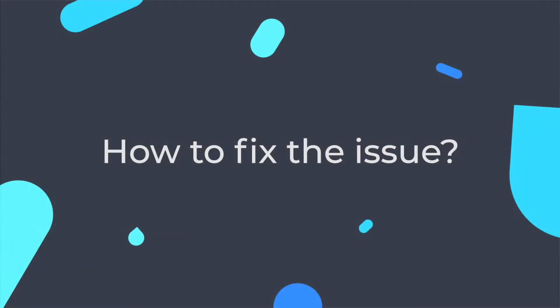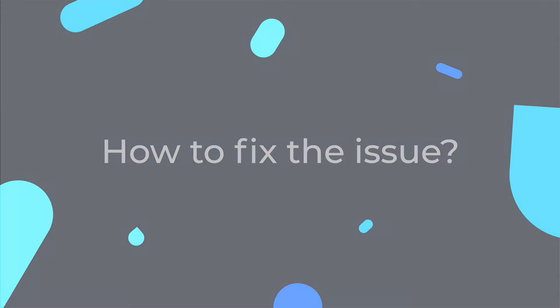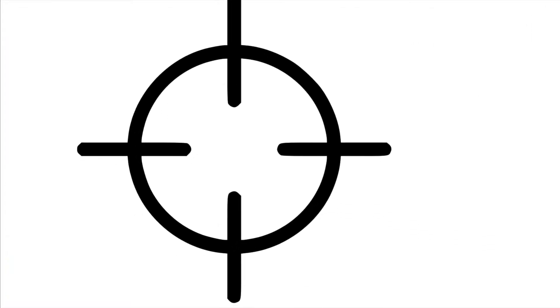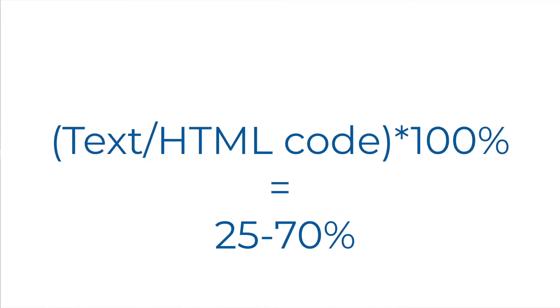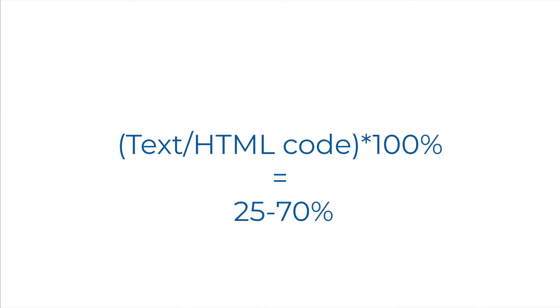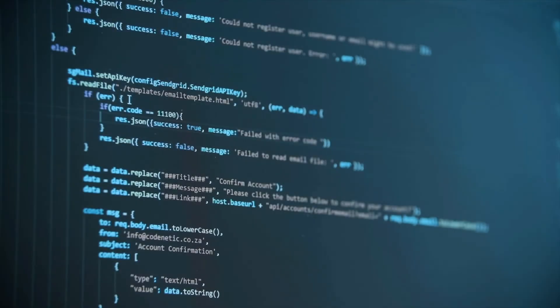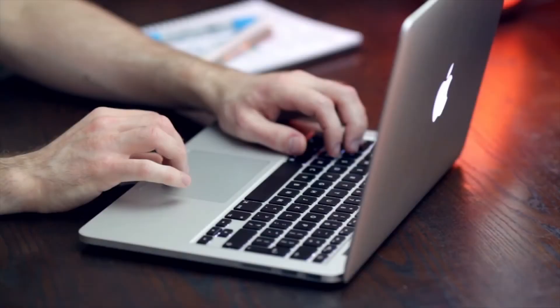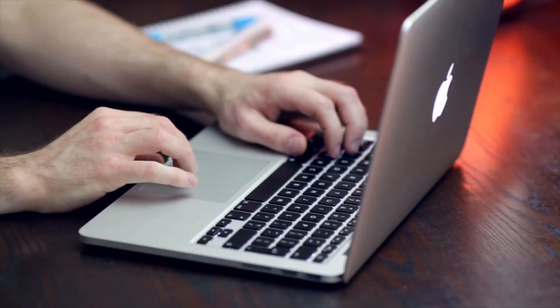How do we fix the issue? A good rule of thumb when it comes to code-to-text ratios is to aim between 25 and 70% of visible text compared to non-visible elements. The key to improving your code-to-text ratio is building a better user experience.